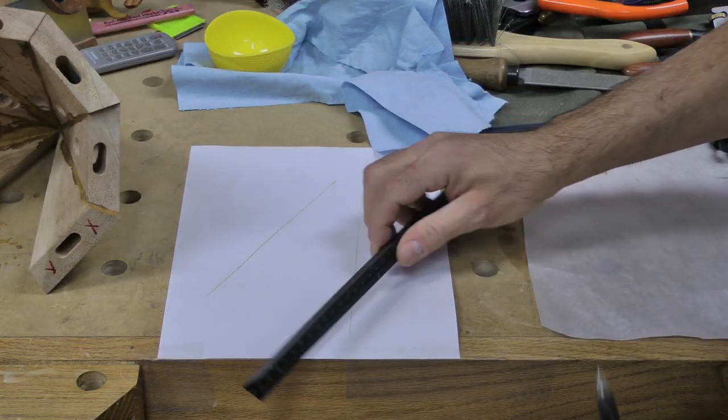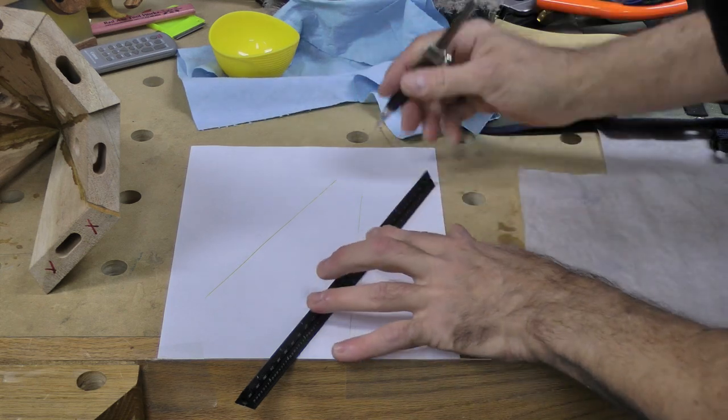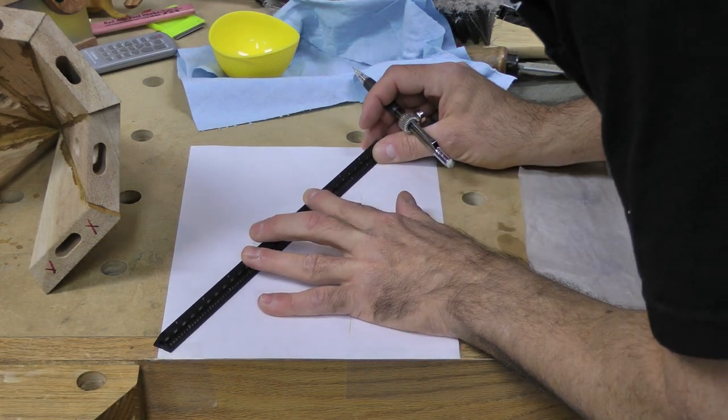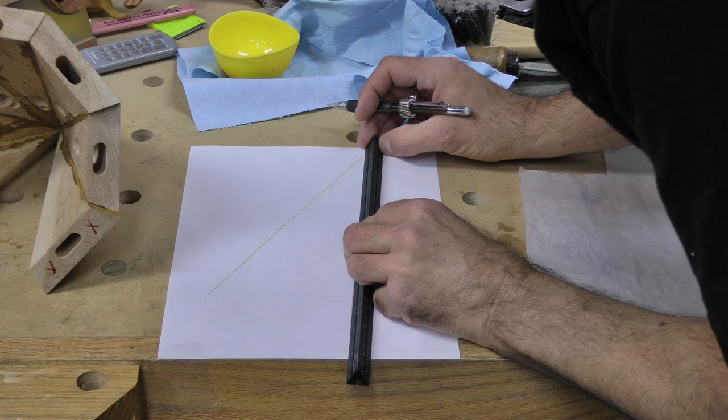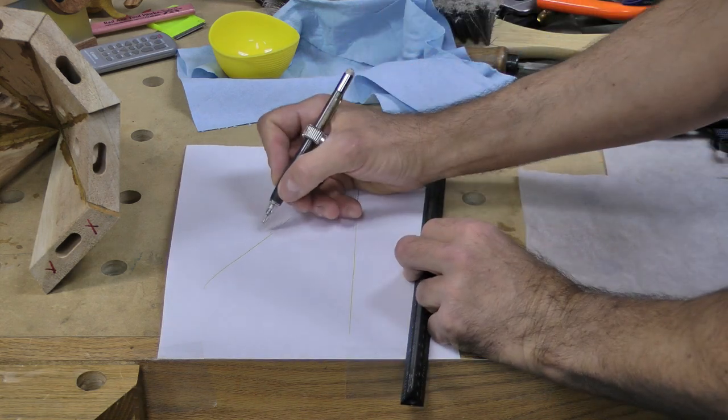So now I'd take a ruler and extend these so that I have the full pattern of what this is gonna be. There, these are my miters.